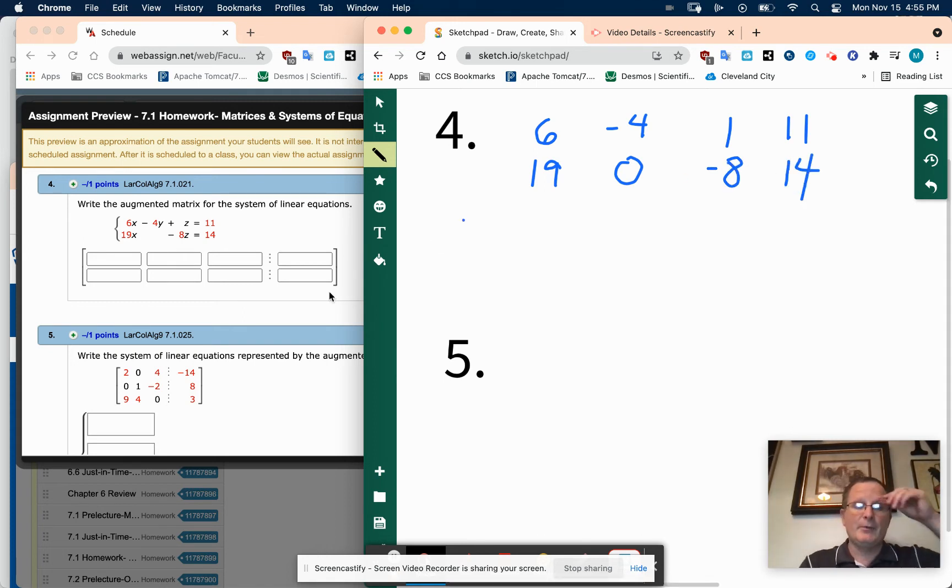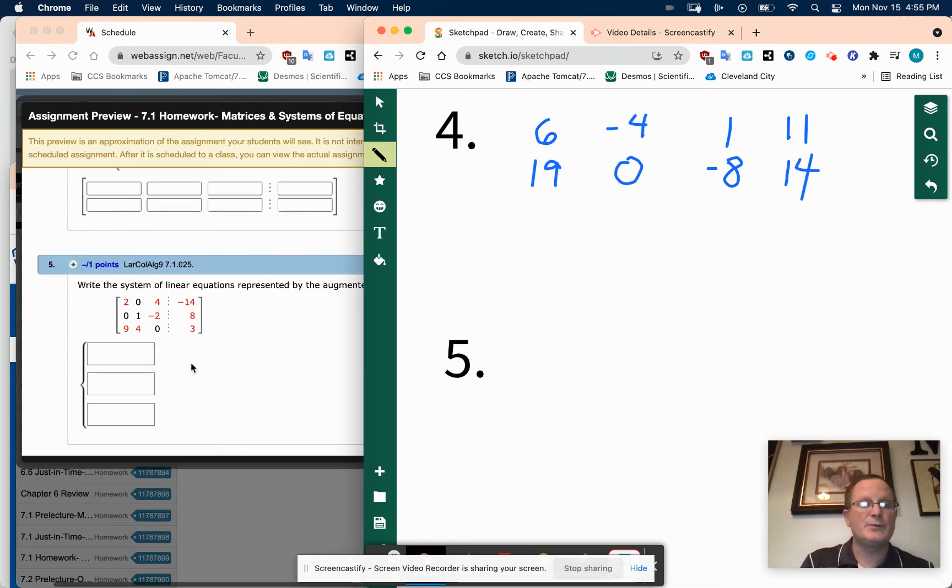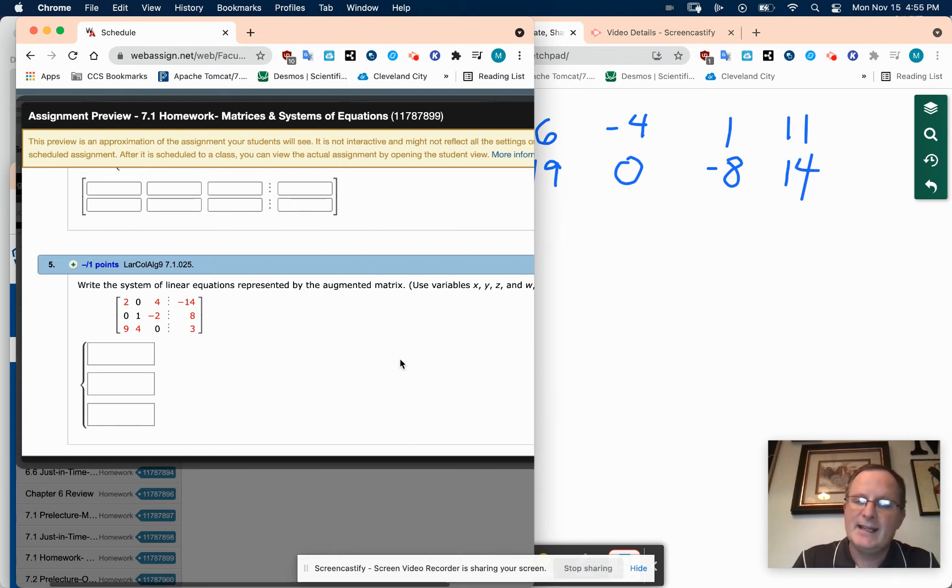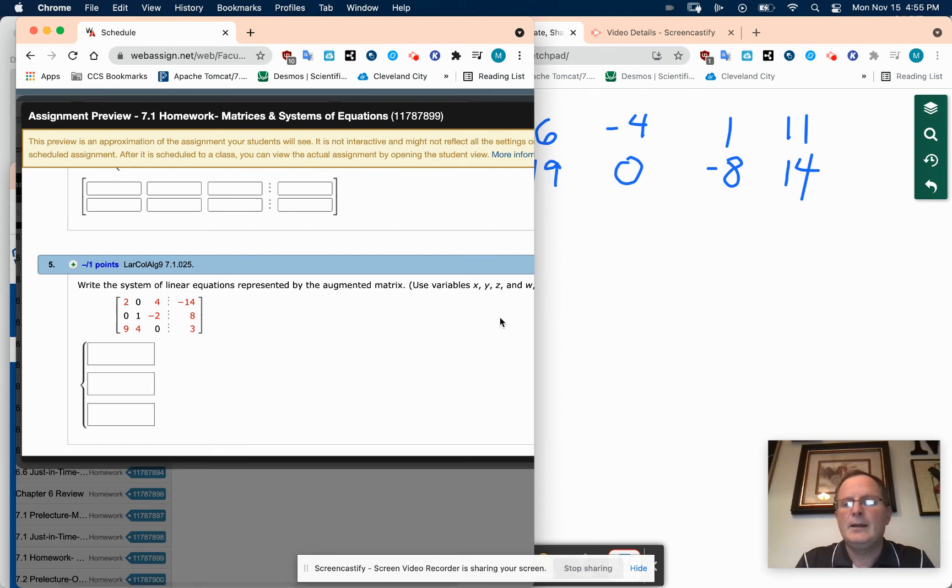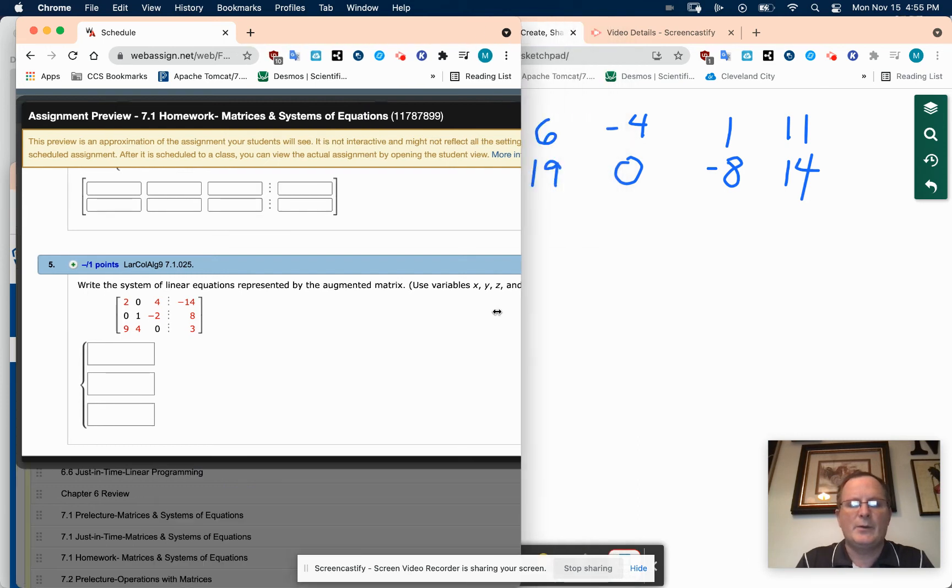Okay, and then number five, I want you to go backwards, right? The system of linear equations represented by the augmented matrix. Use X, Y, Z, and W. Let me make sure we can see all that if applicable. All right, so this one has no W. It's X, Y, and Z.